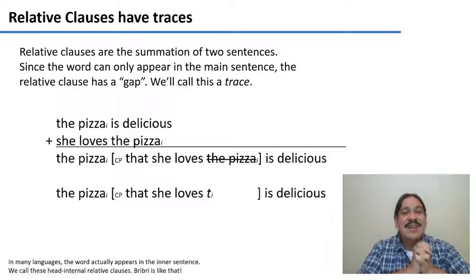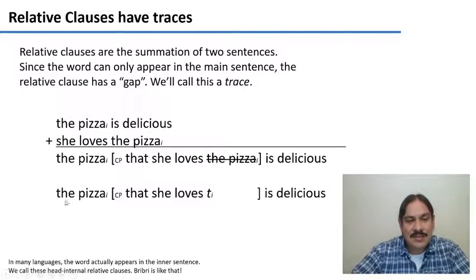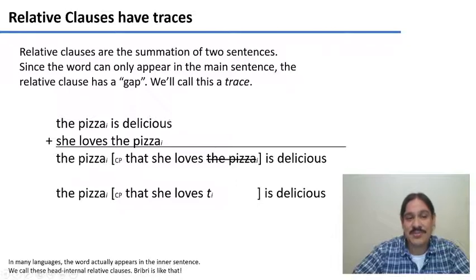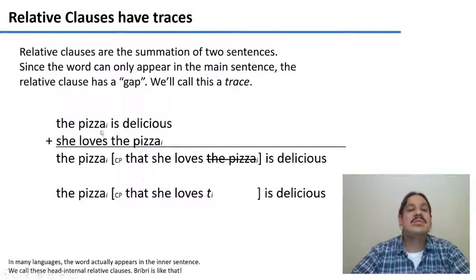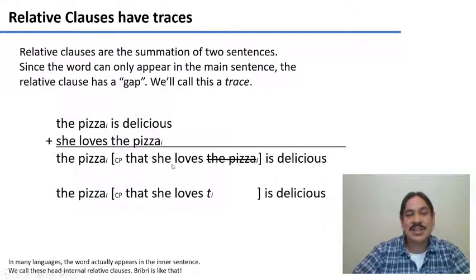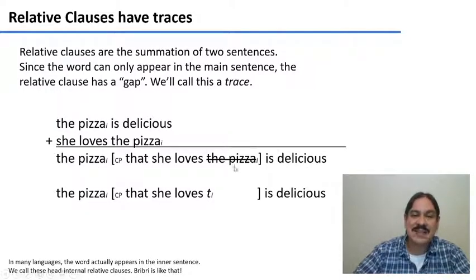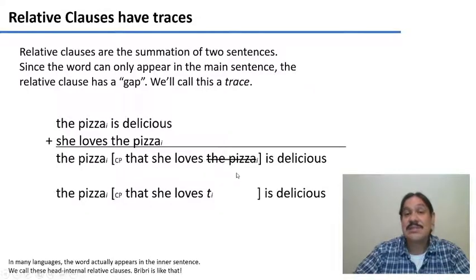Relative clauses are really interesting because they're really two sentences added up and stuck into one. If you think of the phrase 'the pizza that she loves is delicious,' this is really the summation of two different phrases: 'the pizza is delicious' and 'she loves the pizza' — and these pizzas are the same pizza. So we're going to mark them with a little index 'i.' If we add these sentences, we would get 'the pizza that she loves the pizza is delicious.' However, that's not a legal string of words in English, so one copy of 'pizza' has to go. In English, the internal one is the one we erase, giving us 'the pizza that she loves is delicious.'